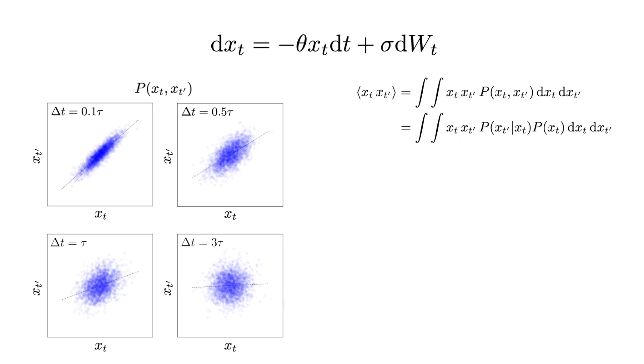Rearranging the terms in the double integral, we can see that the mean of xt prime conditional on xt emerges. As discussed earlier, this mean represents the exponential relaxation of x over the duration t prime minus t.